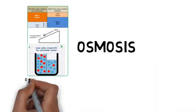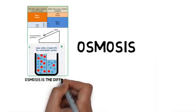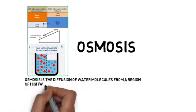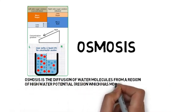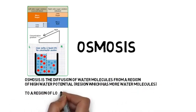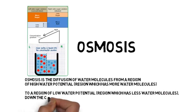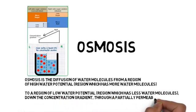Osmosis. Osmosis is the diffusion of water molecules from a region of high water potential, region which has more water molecules, to a region of lower water potential, a region which has less water molecules, down the concentration gradient through a partially permeable cell membrane.